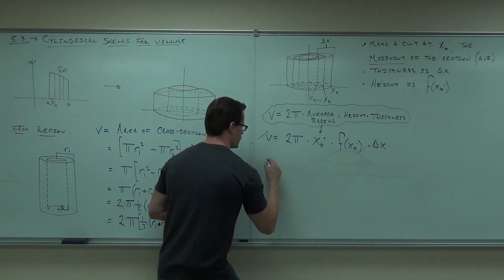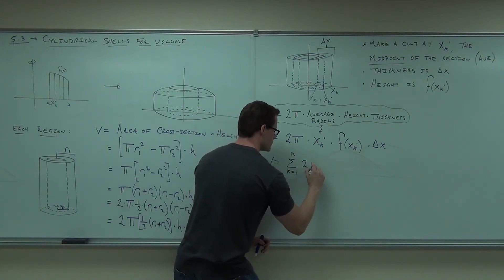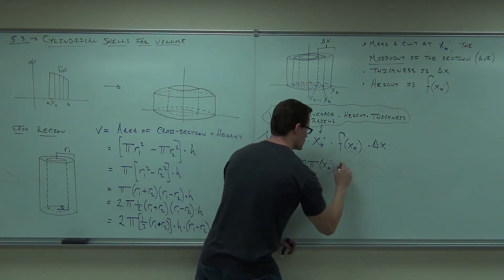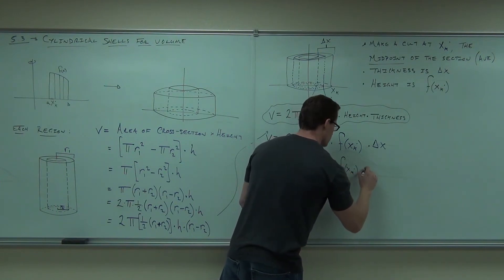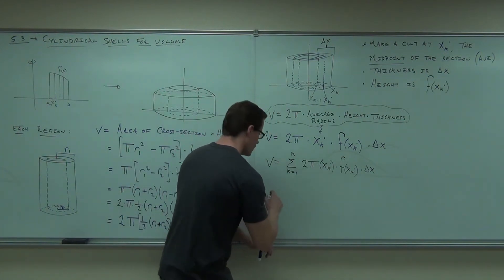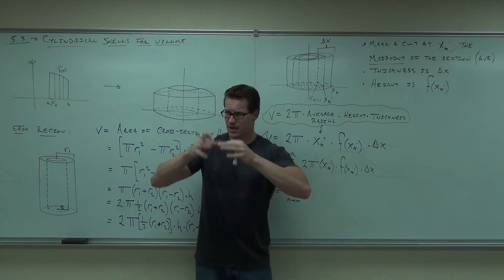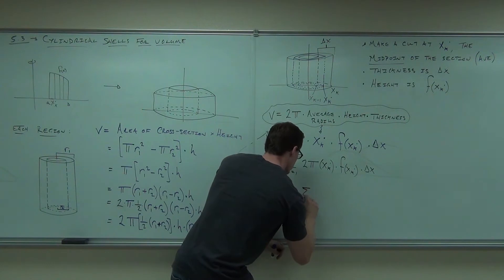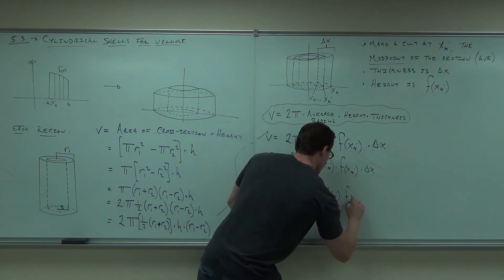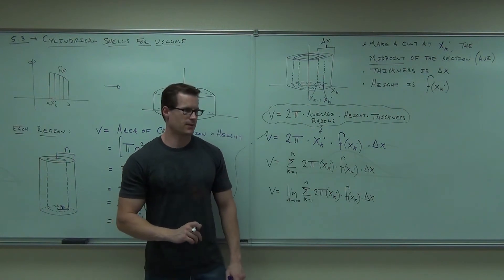This is an approximation for all the shells. Approximation for all the shells. How do I find the exact volume? As what? Good. It says, basically, take that coffee can and make an infinity number of them where they go out just a teeny little bit. What happens when you take a limit of a sum? What do you get out of that? Integral. That's what it is.